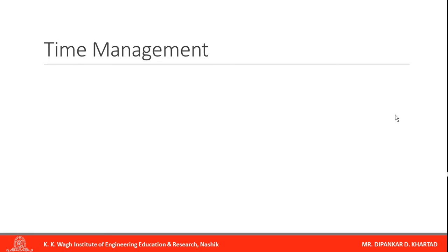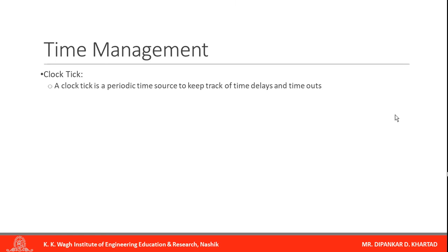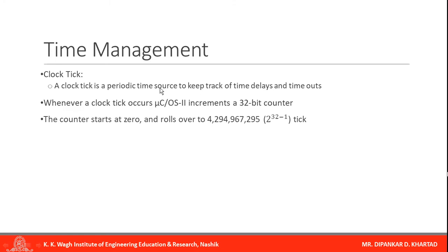Next is time management. The clock tick is a very important part of time management. A clock tick is a periodic time source used to keep track of time delays and timeouts. Whenever a clock tick occurs, MuCOS increments a 32-bit counter. The counter starts from 0 up to 2 raised to 32 minus 1 ticks. So the clock tick uses a 32-bit counter.